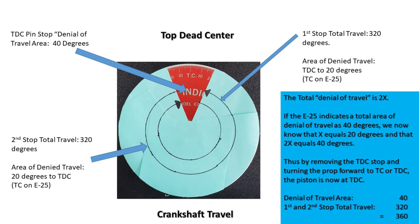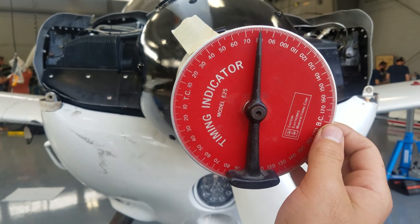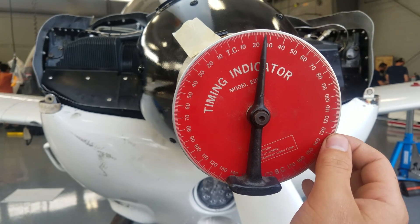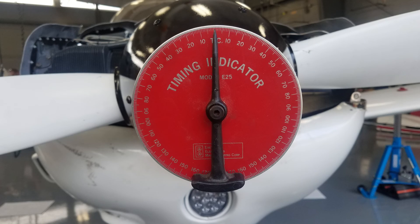By removing the top dead center stop pin and turning the prop forward to top center, the piston is now at top dead center. Adding the denial of travel — 40 degrees — plus 320 degrees for the first and second stop travel equals 360 degrees for the total crankshaft travel. In conclusion, in resetting the dial we were in effect adding those unknown X degrees to the travel of the prop on its new forward rotation, which took it back to top dead center on both the dial and the piston.